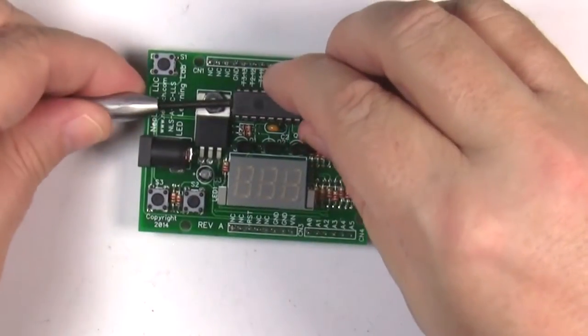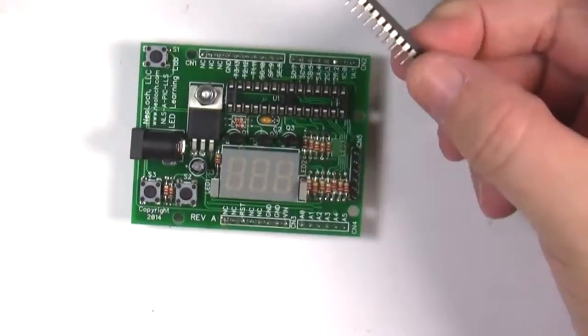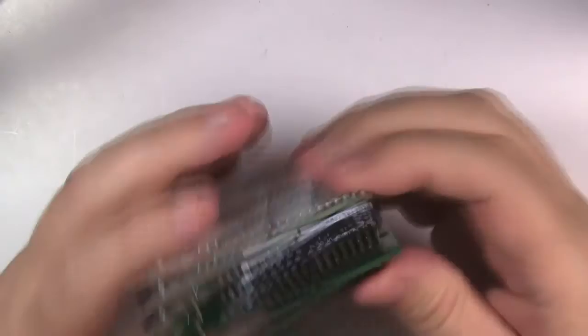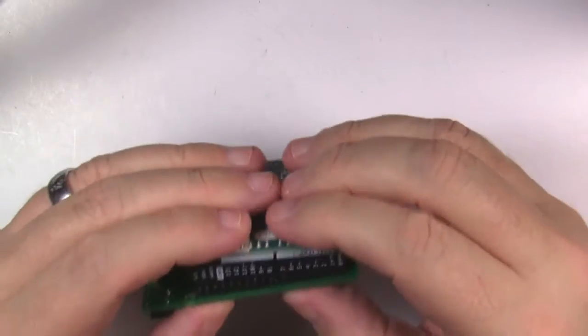Now let's see the Arduino do its thing. To do that, we need to first remove the PIC from the shield and then plug the shield into an Arduino Uno.